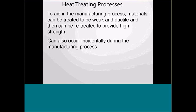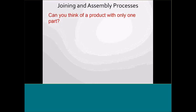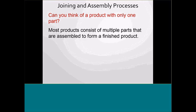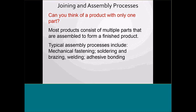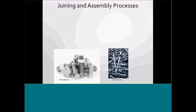Any questions? Good. We'll continue on and get into a little more depth. We talked about joining and assembly processes. I ask them: can you think of a product with only one part? There are many products that have multiple parts assembled to form a finished product. The assembly process could include mechanical fastening, soldering, brazing, welding, and adhesive bonding.